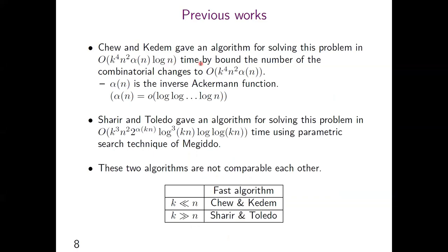To find the running time of the algorithm, they found the number of combinatorial changes. We denote alpha(n) as the inverse Ackermann function, which grows extremely slowly. Shalil and Toledo gave an algorithm for solving this problem using the parametric search technique of Megiddo. These two algorithms are not comparable to each other. If n is bigger than k, the algorithm of Q is faster than Shalil and Toledo. If k is bigger than n, Shalil and Toledo's algorithm is faster.